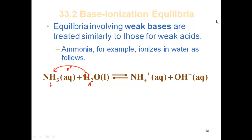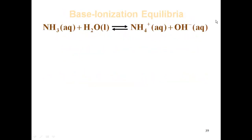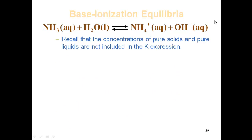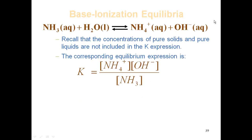We can take this equation and write an equilibrium for it, which would be your products over your reactants — the concentration of your ammonium ion times your hydroxide divided by the ammonia, with water being liquid and not being part of the expression, exactly the same way we've done the other equilibria. So we set up our expression: ammonium ion concentration times hydroxide concentration divided by ammonia, with water being one.